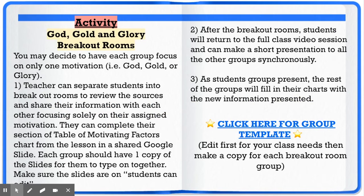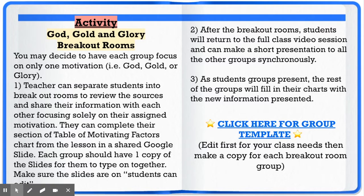So here's the activity: Gold, God, and Glory for this lesson. Students are investigating different resources, a variety of materials, and they're completing this motivating factors chart after reviewing the resources. What you may want to do as the teacher is have each group focus on only one motivation — just focusing on God, just focusing on Gold, or just focusing on Glory.